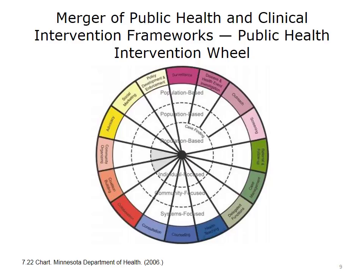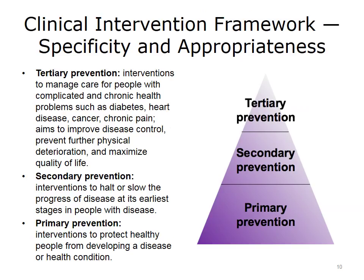The term population health management is really a merger of public health interventions and clinical intervention frameworks. The intervention wheel is a population-based practice model that encompasses three levels of practice: the community level, the health systems level, and the individual and family level. There are 16 separate public health interventions listed on the outer ring of the wheel. Each intervention at the practice level contributes to improving population health. Disease and health event investigations and surveillance are all part of what we call the case-finding process.